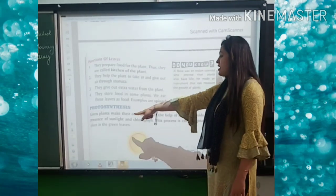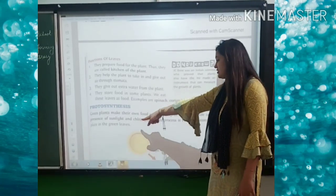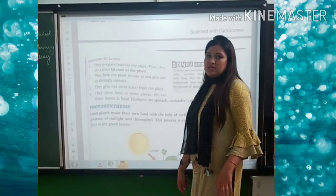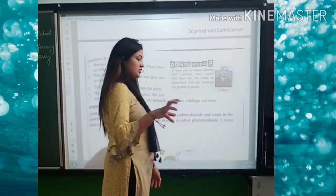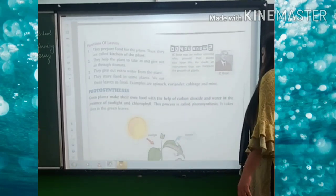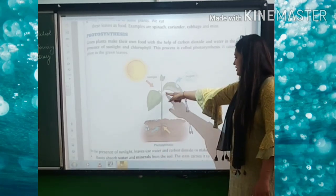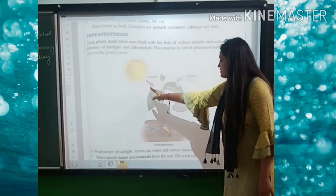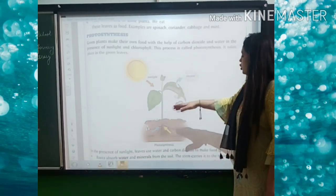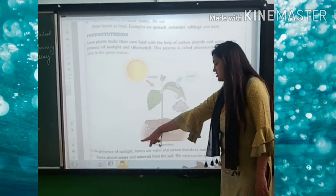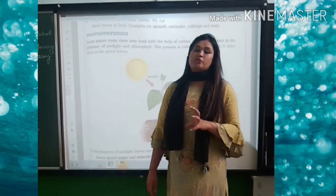Now comes photosynthesis. Green plants make their own food with the help of carbon dioxide and water, in the presence of sunlight and chlorophyll. This process is called photosynthesis and it takes place in the green leaves. Water and minerals are absorbed by the roots and carried through the stem into the leaves. In the presence of sunlight, leaves use water and carbon dioxide to make food for the plant in the form of glucose.